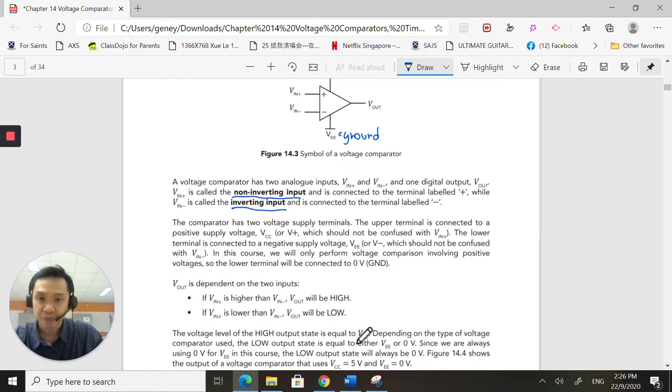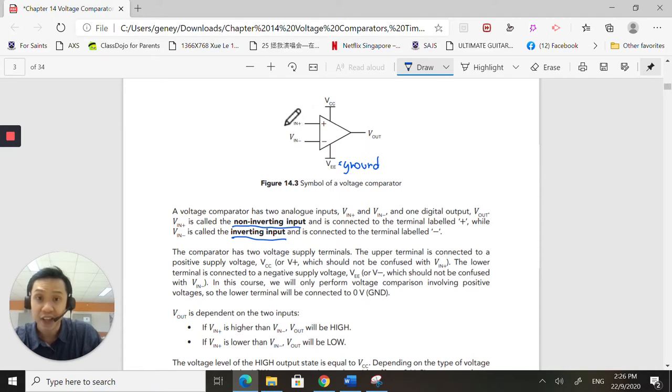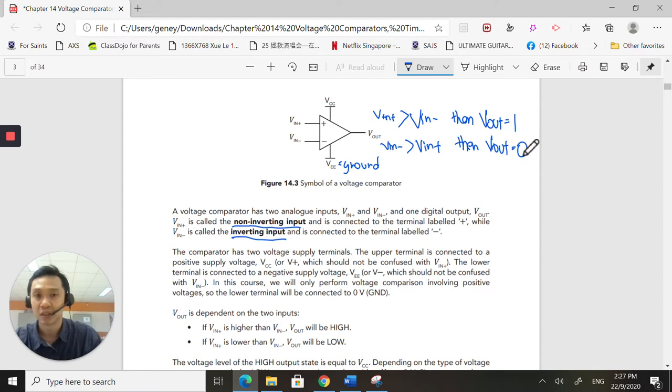So this is how it works. If V in plus is bigger than V in minus, then the V out will be a high. But if the opposite holds true, if V in minus is greater than V in plus, then the V out will be a low. So this is a digital component. We are working in terms of highs and lows for the output. But your inputs can be analog. It does not have to be digital. It can be analog. So just remember this. This is a good way to convert analog to kind of a digital signal that you want.